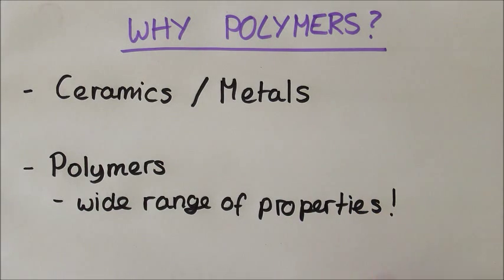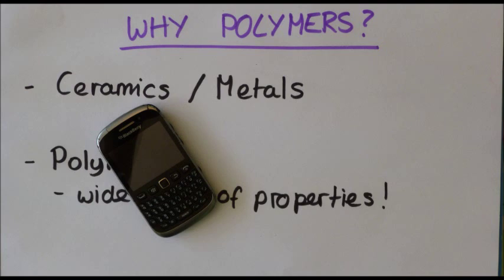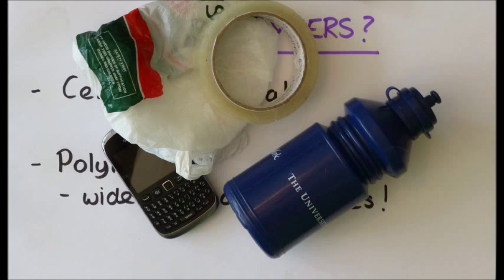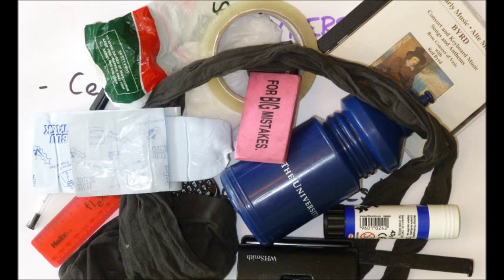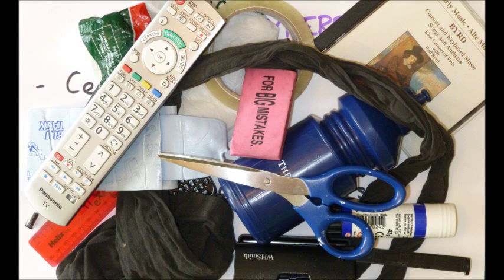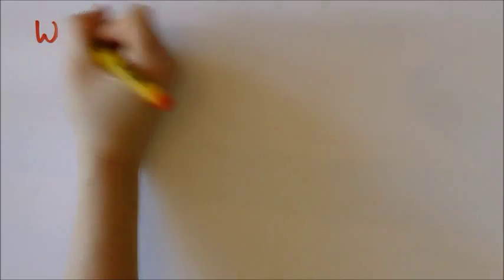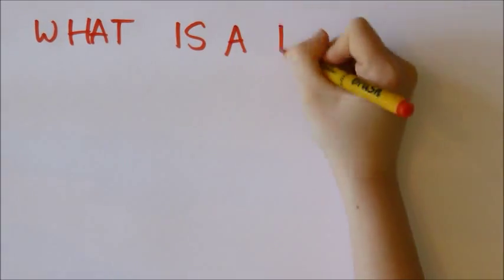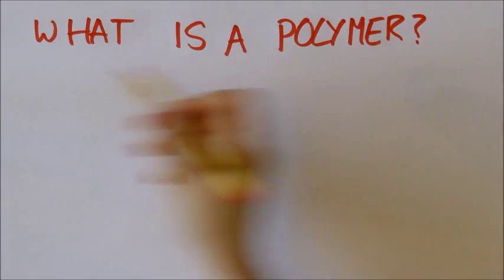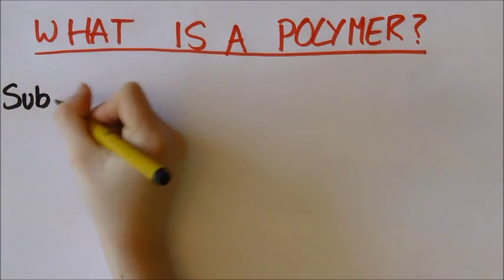This range of properties can be easily demonstrated by looking around your home. Polymers are everywhere, from the circuitry inside your mobile phone to the nylon in your clothes. So, what are polymers and what is it about them that allows them to have their wide range of properties?